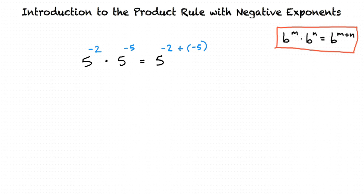written as 5 to the negative 2 plus negative 5, and negative 2 plus negative 5 equals negative 7. So the final answer is 5 to the negative seventh power.